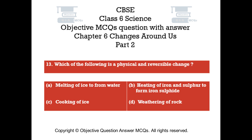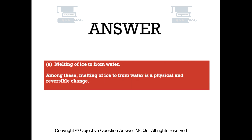Question number 13. Which of the following is a physical and reversible change? Option A: melting of ice to form water. Option B: heating of iron and sulfur to form iron sulfide. Option C: cooking of food. Option D: weathering of rock. The right answer is Option A: melting of ice to form water. Among these, melting of ice to form water is a physical and reversible change.